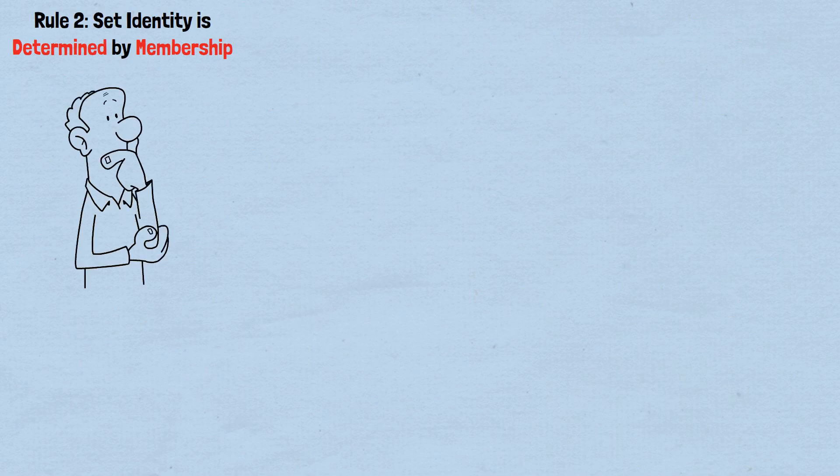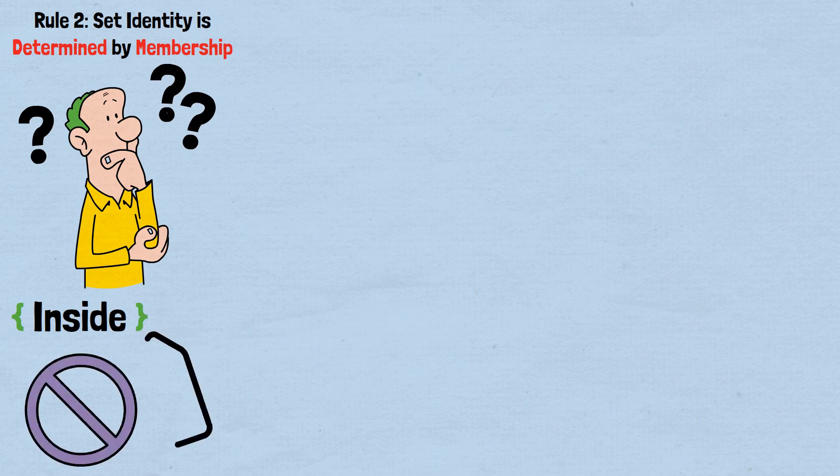Rule two, set identity is determined by membership. What makes a set the specific set that it is? Simply what's inside it. Nothing else matters. Not how we label it, not how we describe it.